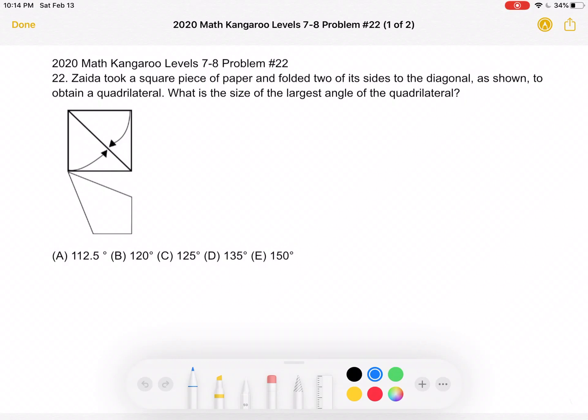This is the 2020 Math Kangaroo Level 7-8, problem number 22. Zyda took a square piece of paper and folded two of its sides to the diagonal, as shown, to obtain a quadrilateral. What is the size of the largest angle of the quadrilateral?